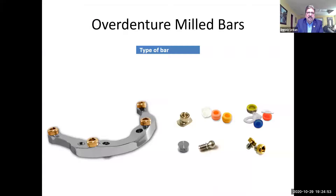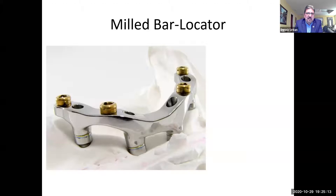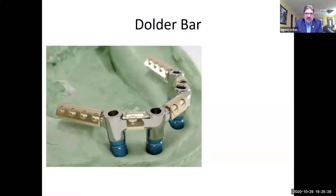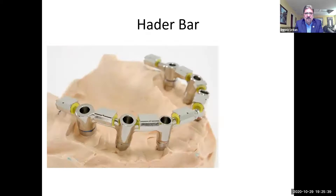Let's look at overdenture mill bars. There are so many different bar designs — pretty much we're doing a titanium mill bar with an attachment assembly. They can be drilled into the bar and could utilize anything from ERA to locator to Rhein83 to any other attachment system on the market. The technology has come so far with these types of cases. I don't do many older bars anymore, but I still see Hader bars once in a while. We just did a combination case with a Hader bar — Hader clips on the anterior and Rhein83 attachments on the posterior — and that worked out really well on the upper case.